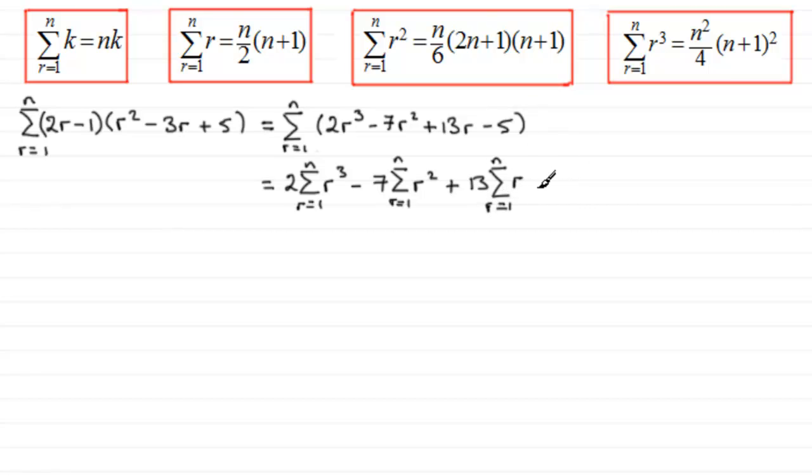And then for the last term, we've got minus Sigma r going from 1 to n for 5.